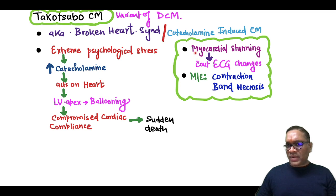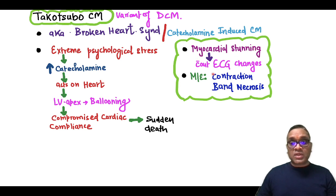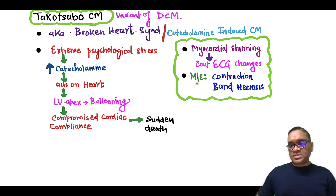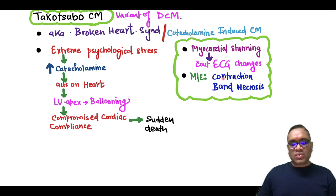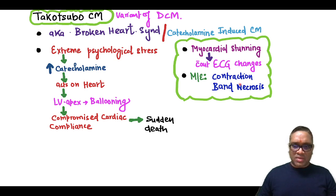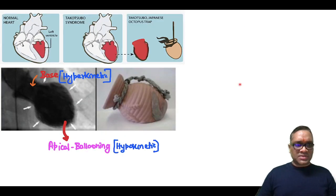An important finding here is that you are going to see myocardial stunning without any ECG change, because it will resemble acute coronary syndrome. In microscopic examination, you are going to see contraction band necrosis because it resembles acute myocardial infarction, and contraction band necrosis can be present in the examination.